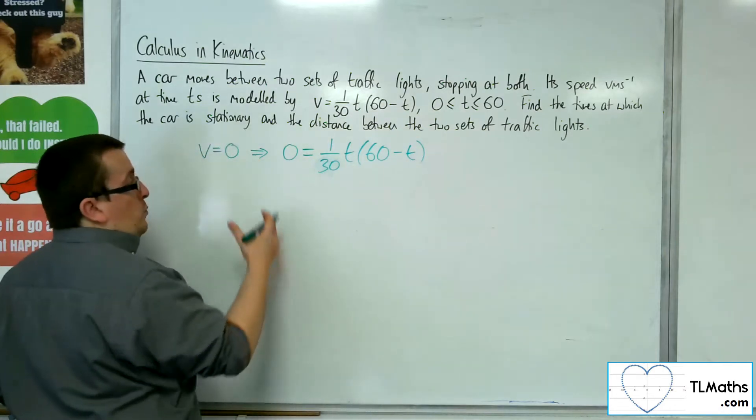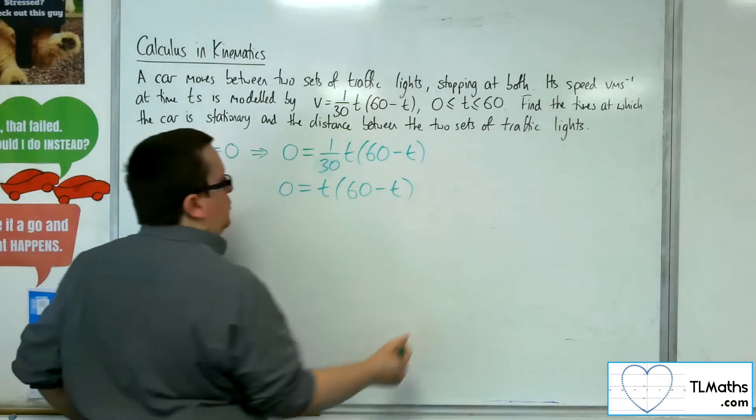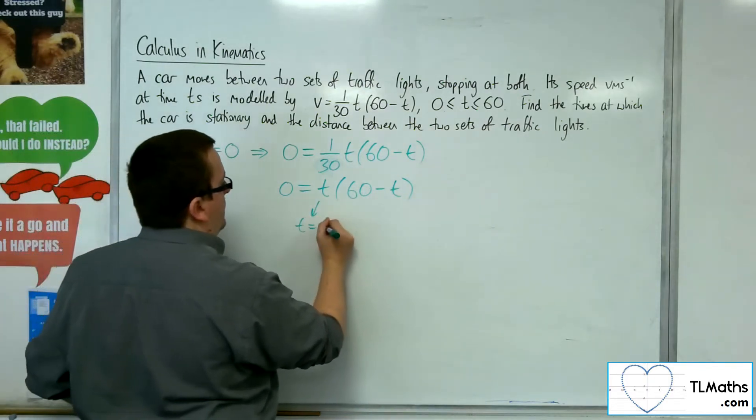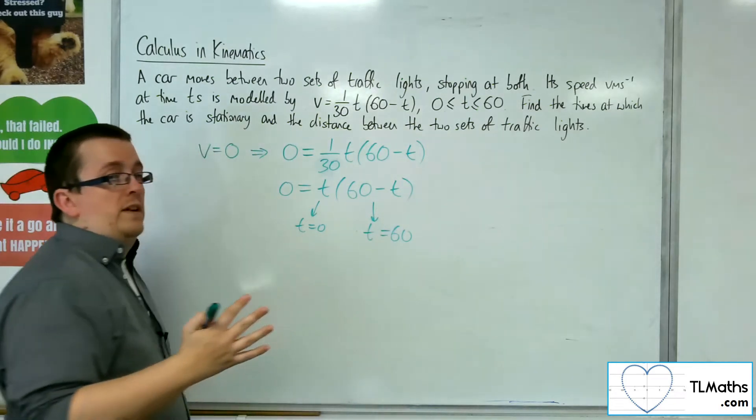So, if you want to, you can multiply both sides by the 30, and it's all neatly factorised for us, so that will be when t is 0 and when t is 60. So that is when the car is stationary.